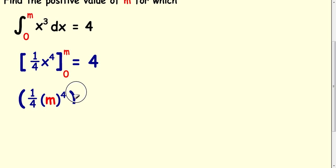So ¼m⁴ take away ¼(0⁴) is equal to 4. So really what we're trying to do here is set an equation up that we can solve.